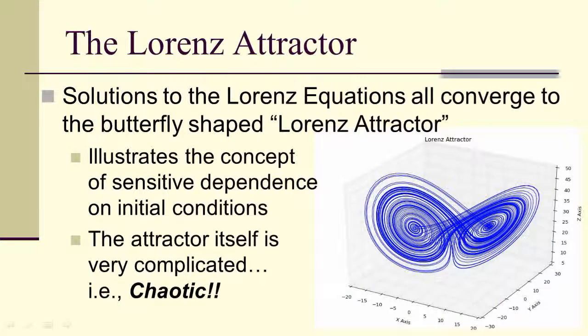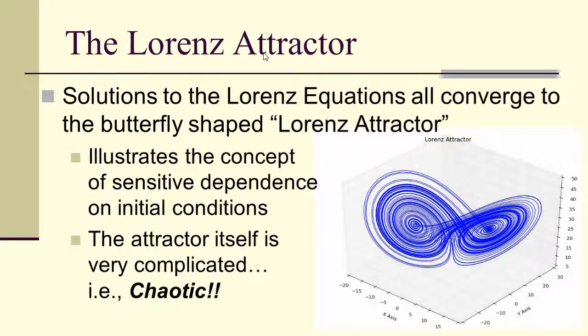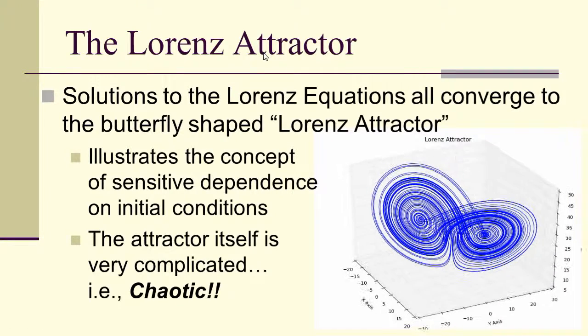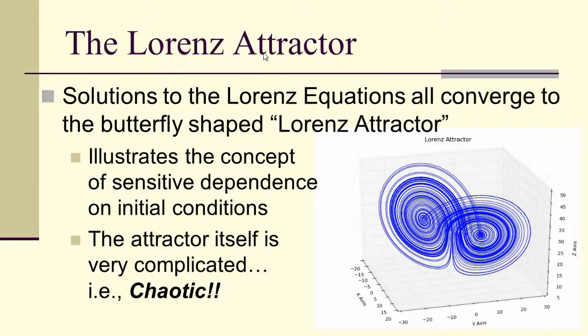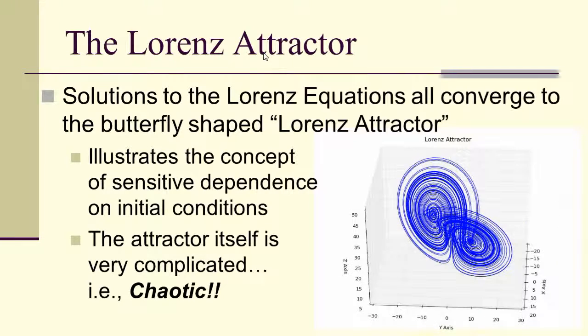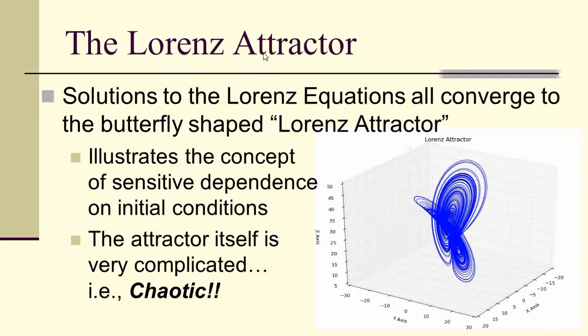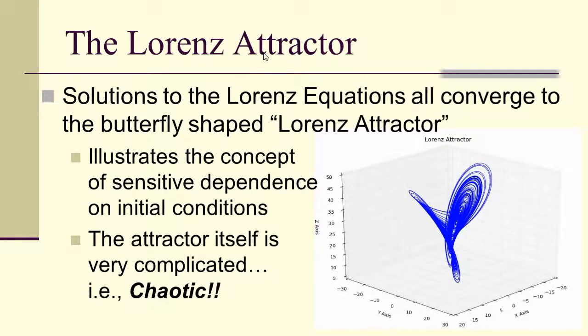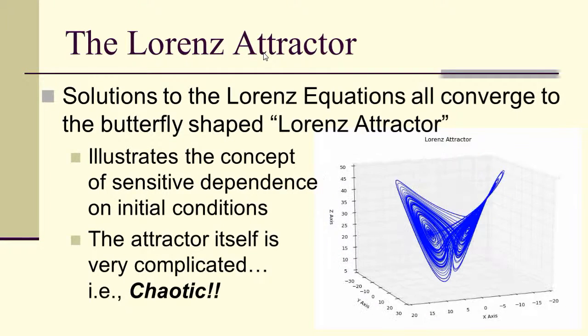And what he saw was what's known as the Lorenz attractor. So this is the butterfly. You've probably seen it. I'm going to rotate it here in three dimensions. The attractor looks very complicated. In fact, it's chaotic. Now, if this is an intentional example, intentional capturing what it means to be chaotic, then let's see what we mean when we say the word chaotic.